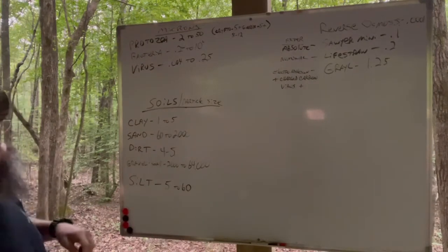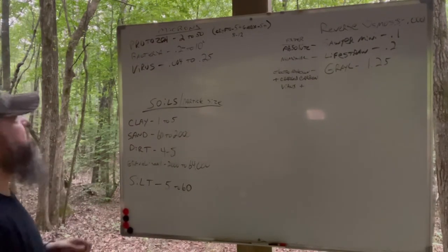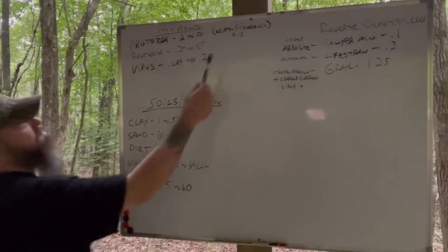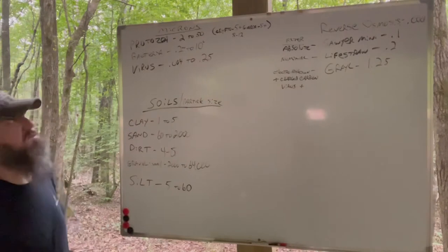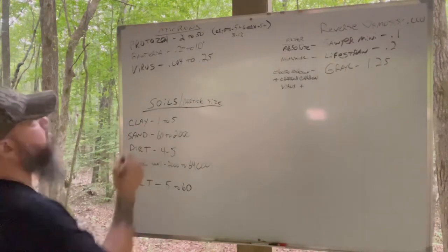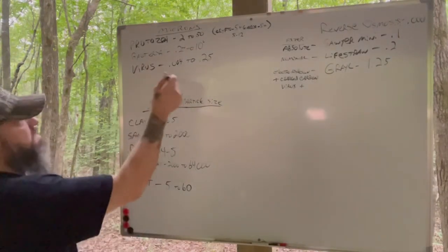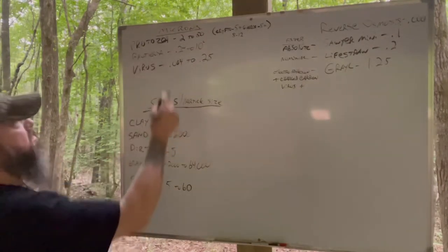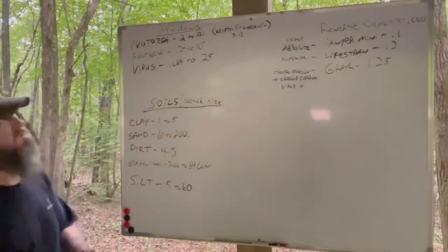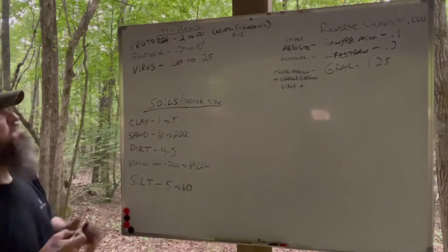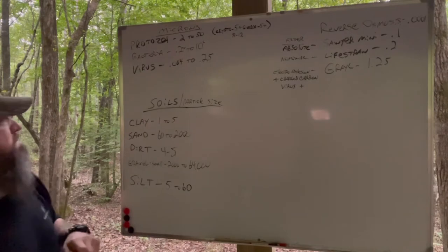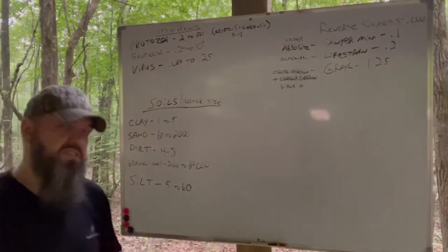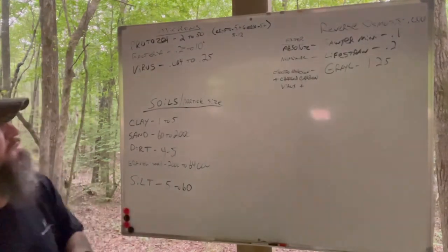If we look back up here at our microns and our things that will harm us, what up here is larger than a 1? Crypto and Giardia, 8 to 12, it's 5+, bigger than the 1. Bacteria, negative. Virus, negative. Protozoa in general is 2 and up, so protozoa such as crypto and giardia and others, they're larger than the 1.